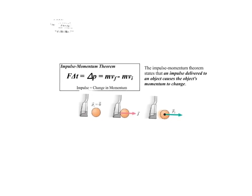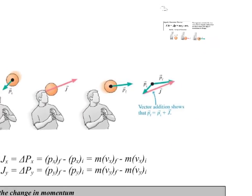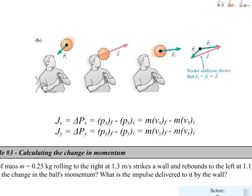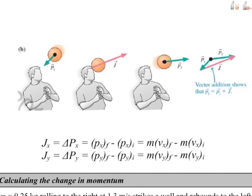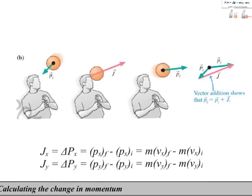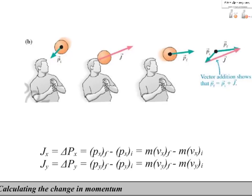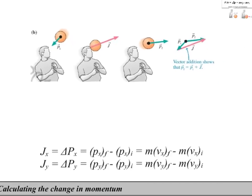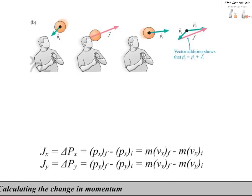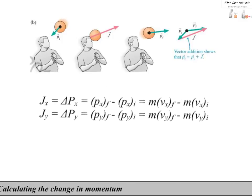Now, with both impulse and momentum being vectors, we can see that direction is important when we consider the impulse momentum theorem. So, the soccer player in this picture here is a little bit more complicated of a case. Because both impulse and momentum are vectors, we can rewrite that impulse momentum theorem in terms of the x and y components.